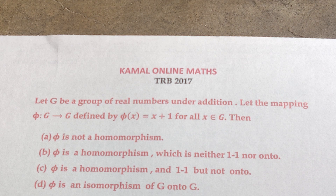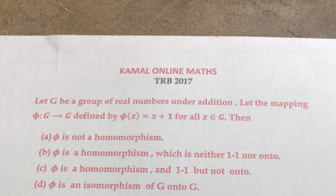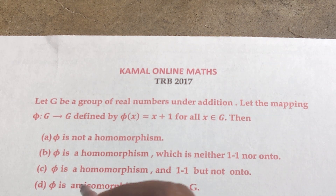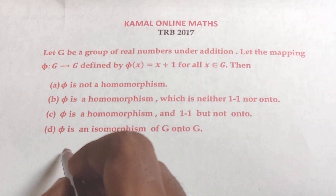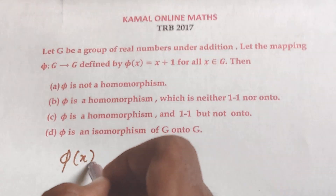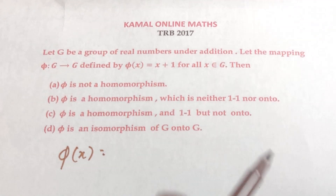G is the group of all real numbers with the binary operation of usual addition. Phi is defined as phi of X equals X plus 1. We need to check whether phi is a homomorphism, and whether it is one-to-one and onto.